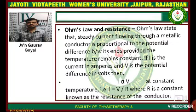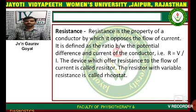Therefore, I is equal to V upon R, where R is a constant known as the resistance of the conductor. Resistance is a property of a conductor by which it opposes the flow of current. It is defined as the ratio between the potential difference and the current of a conductor.